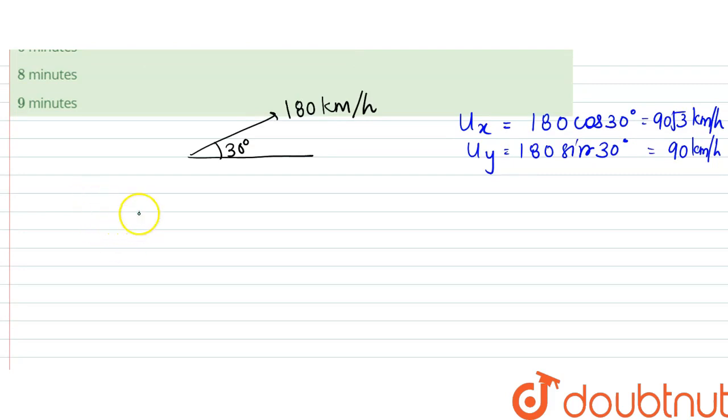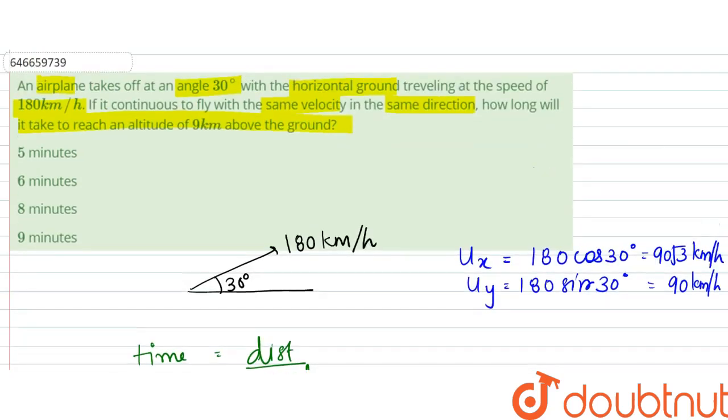So time would be equal to distance by speed. What are we given is that it travels 9 kilometers above the ground. It reaches an altitude of 9 kilometers above the ground.